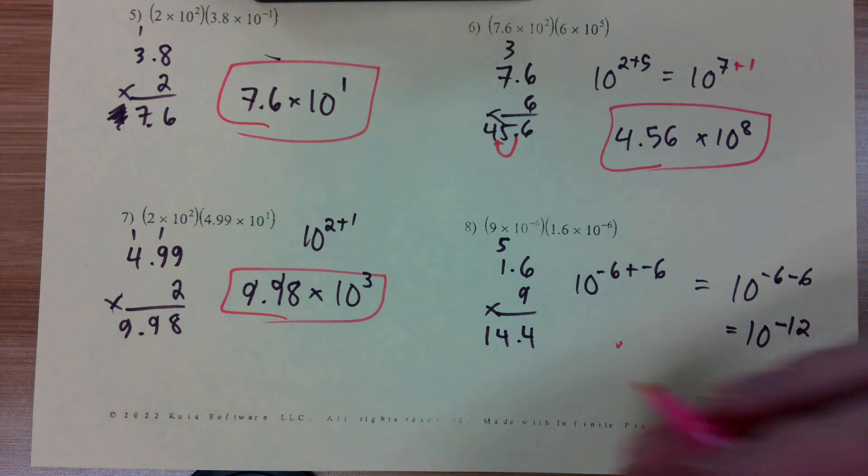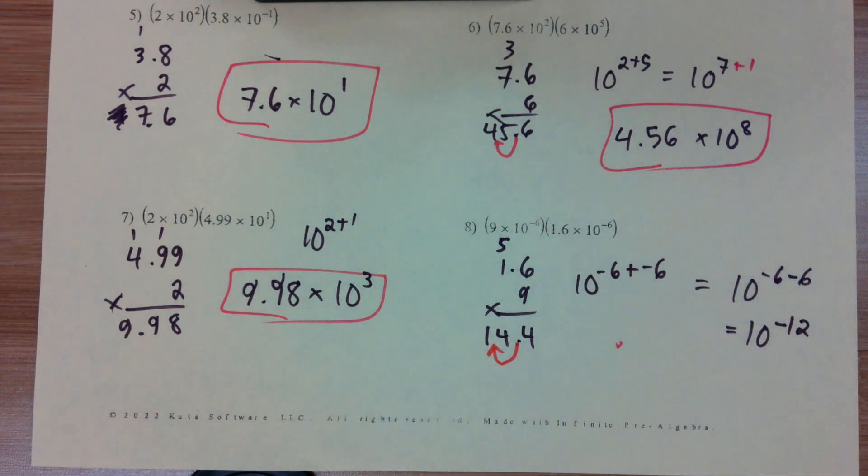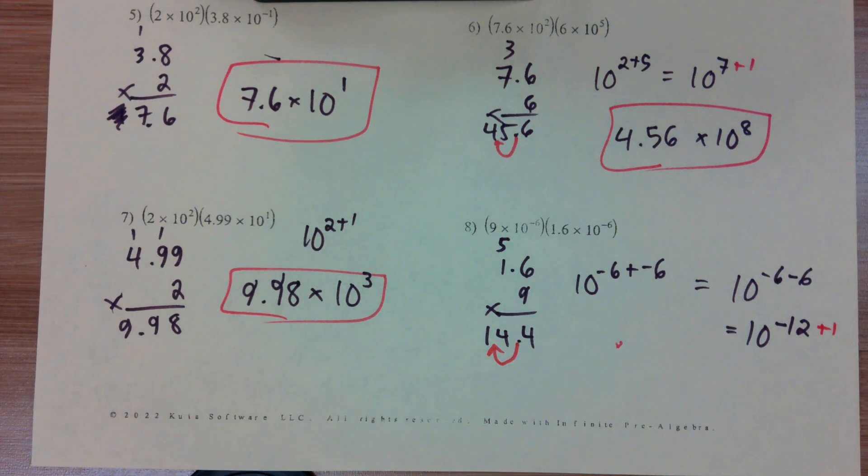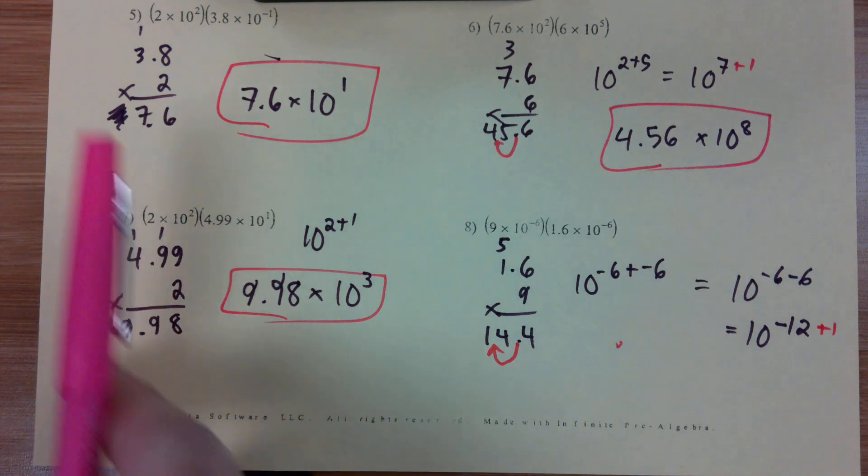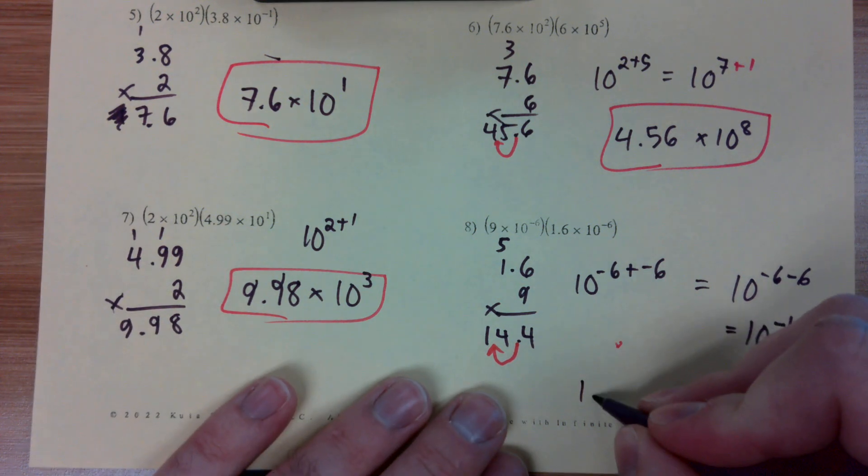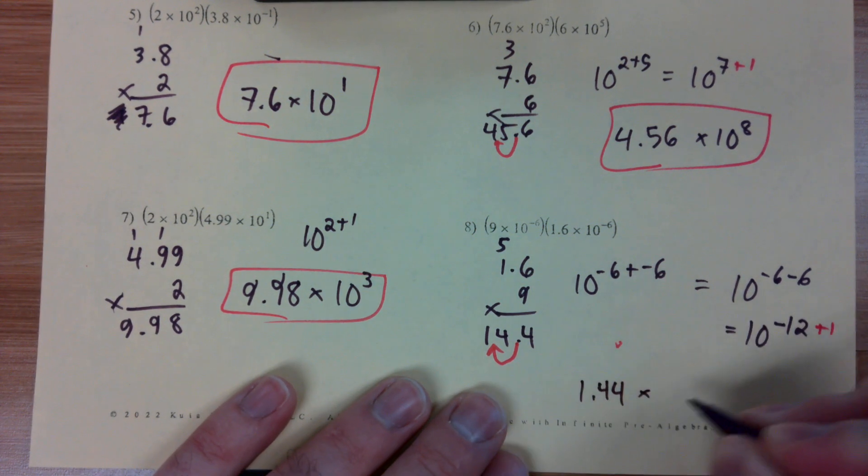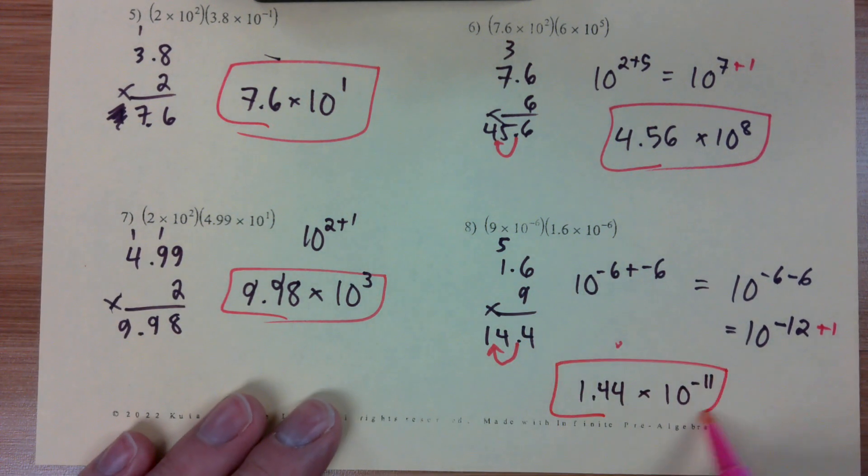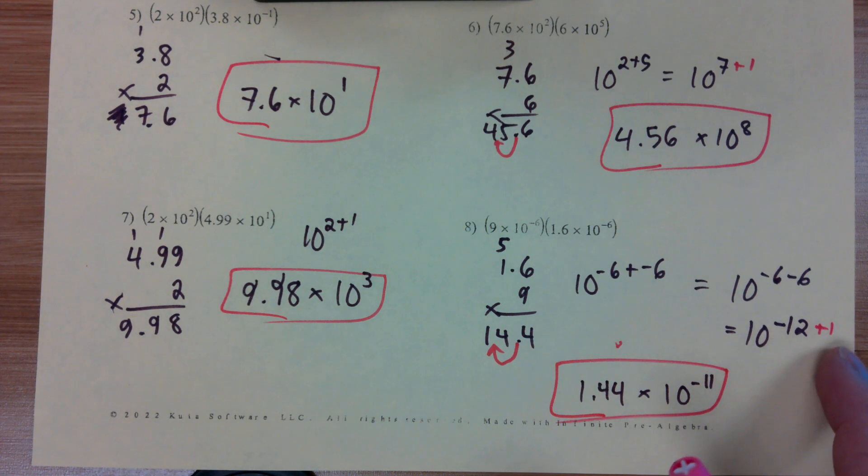Now this is interesting. We move our decimal one space over, so we have to add one to our power, right? Well, negative 12 plus 1 doesn't give us negative 13. It gives us negative 11, right? So if we have a negative power of 10 that we have to add one to, we've got to remember that we're going in the right direction when we add that.